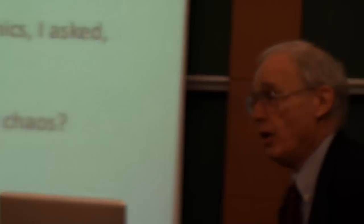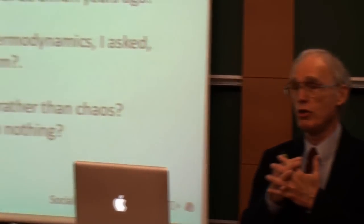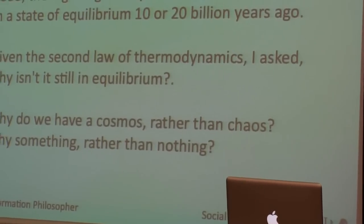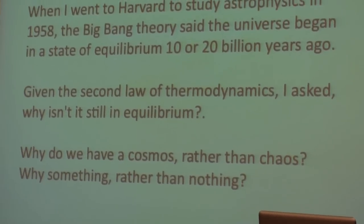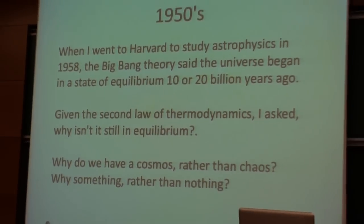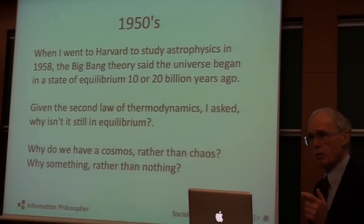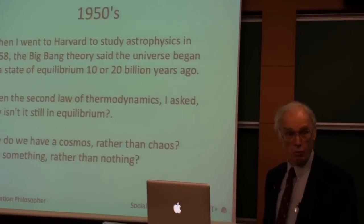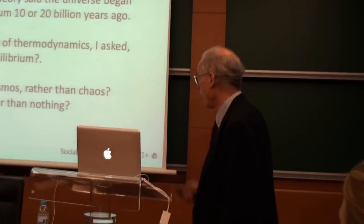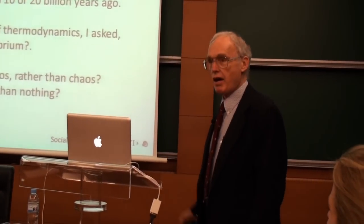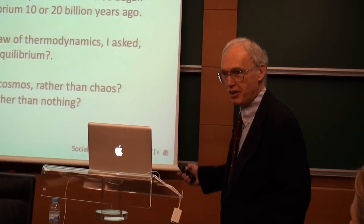More gritty than nitty, I hope. When I went to Harvard in the 1950s to study astrophysics, the Big Bang Theory told us that the universe began in a state of equilibrium some 10 or 20 billion years ago. Given the second law of thermodynamics that I studied as an undergraduate at Brown, I asked: why aren't we still in equilibrium? What is the second law all about? Why do we have a cosmos rather than a chaos? Why something rather than nothing?